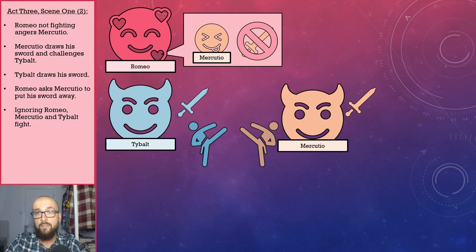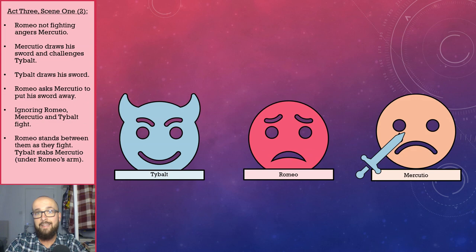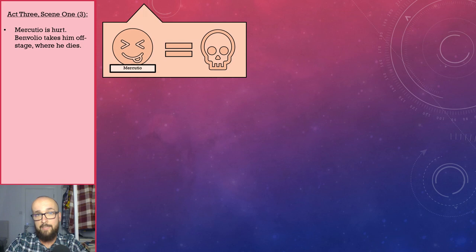As they fight, Romeo tries to stand between them in an attempt to break them up, and as he does this, Tybalt stabs Mercutio under Romeo's arm and then quickly flees. Mercutio is clearly hurt by his wounds. Benvolio takes him off stage and Mercutio dies.